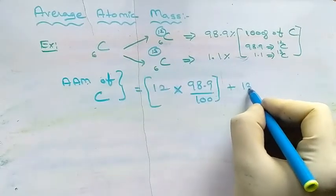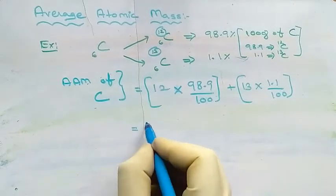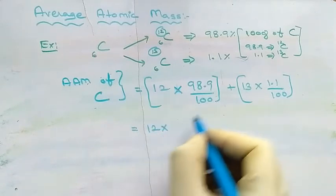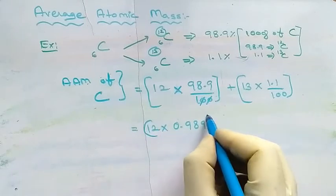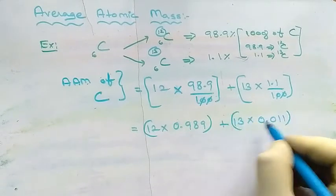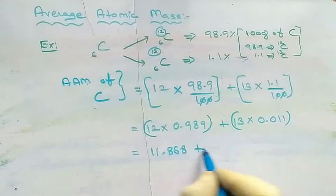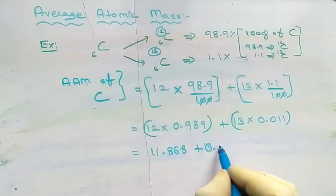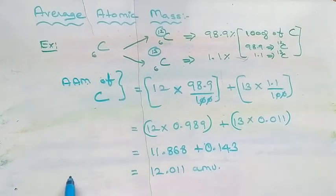Plus 13 — the mass of the second isotope — multiplied by 1.1 divided by 100. Simplifying: 12 × 0.989 plus 13 × 0.011, which gives 11.868 plus 0.143, equal to 12.011 atomic mass units. This is how we calculate the average atomic mass of carbon.